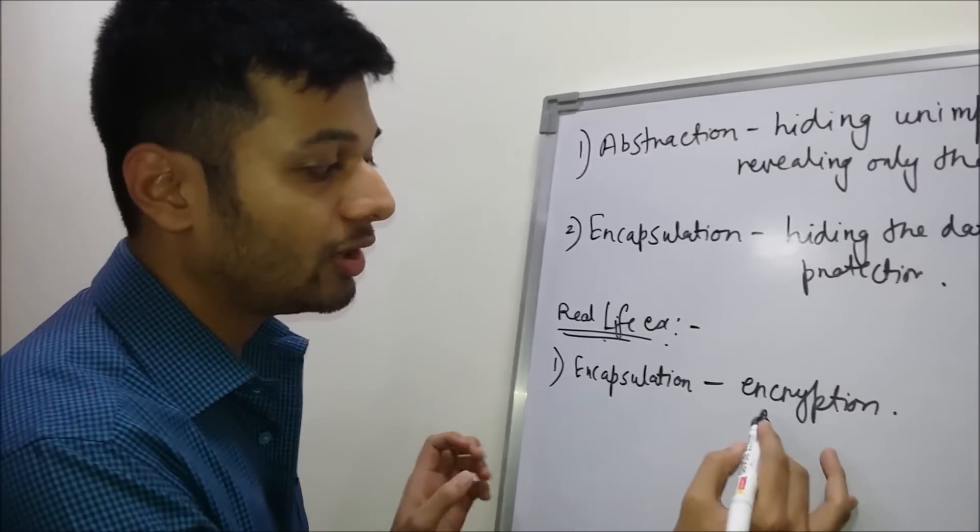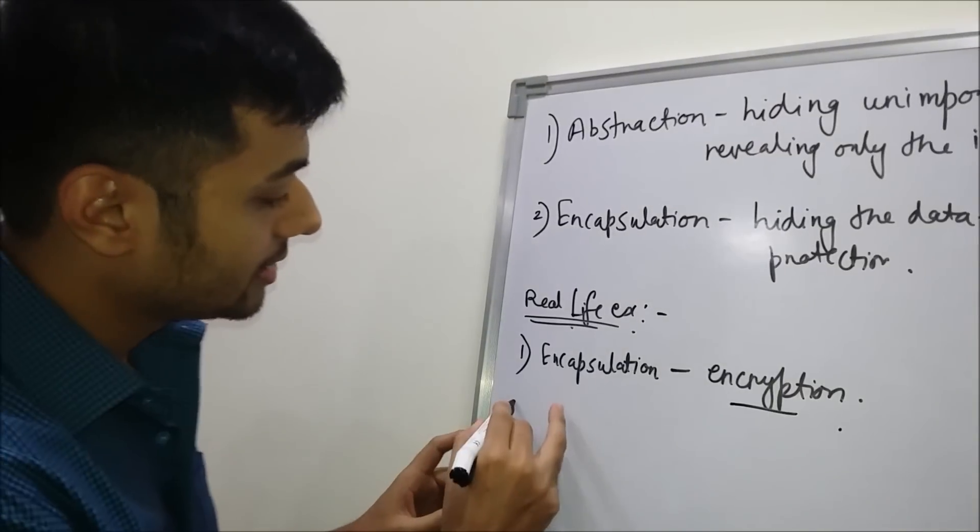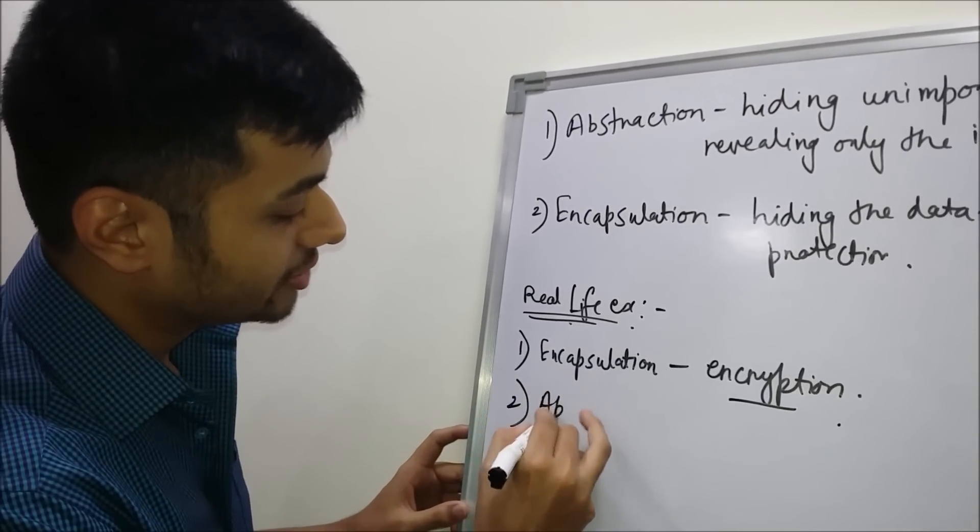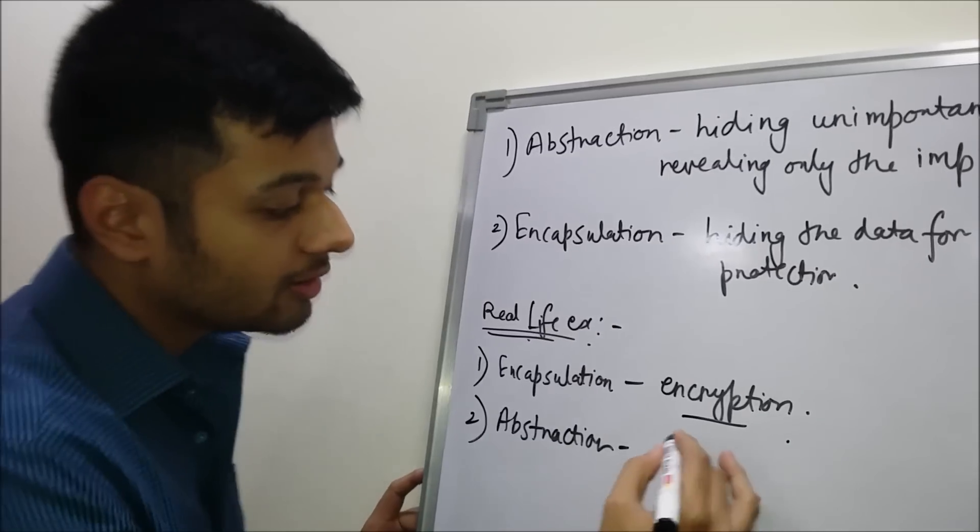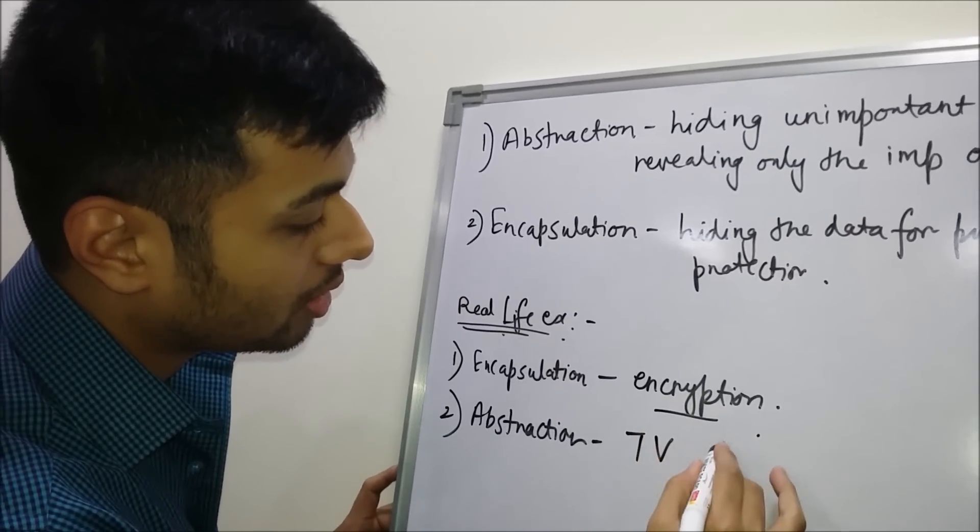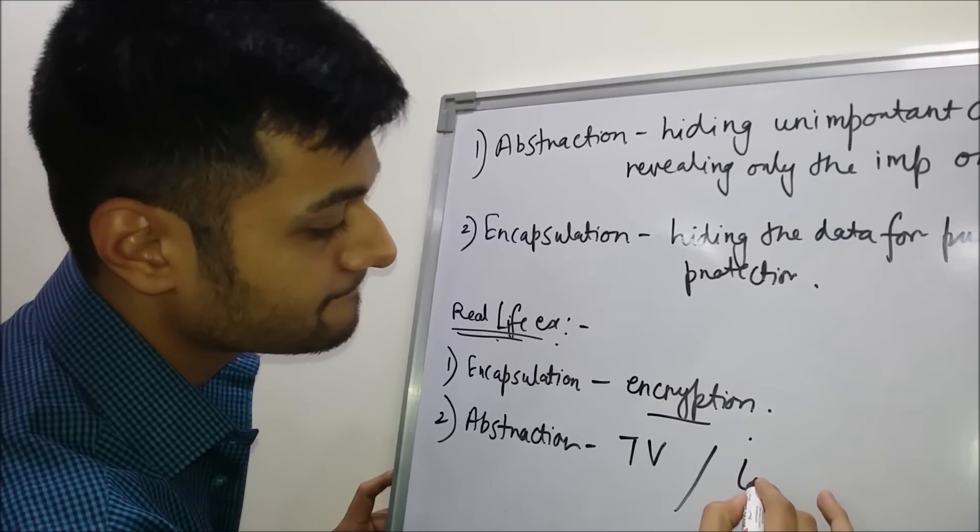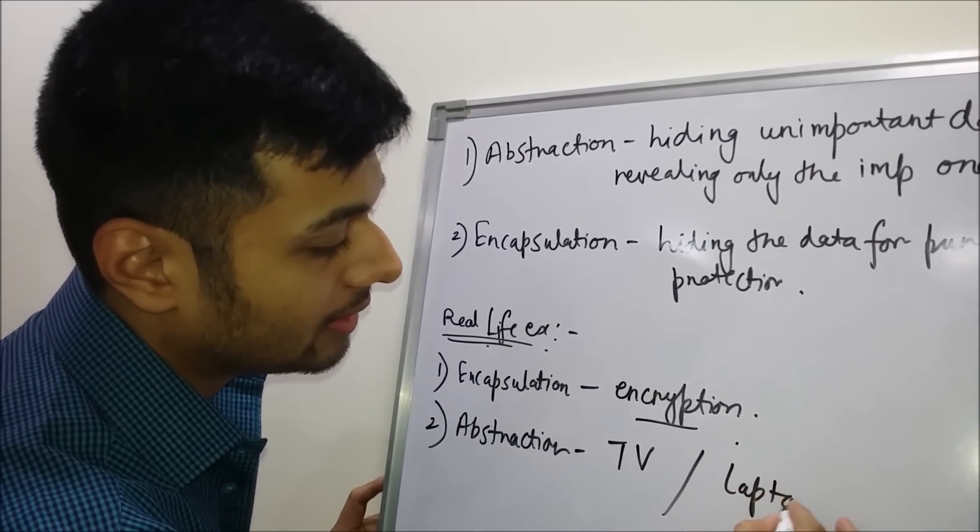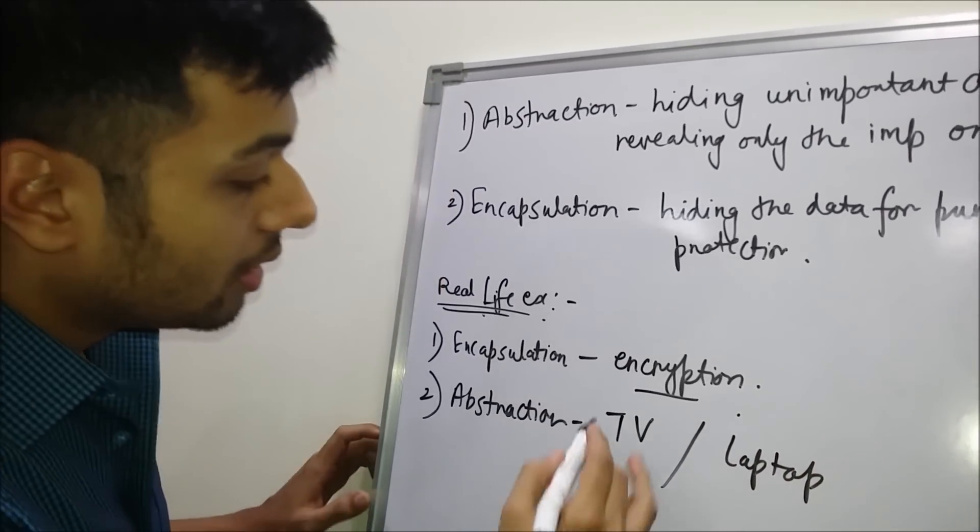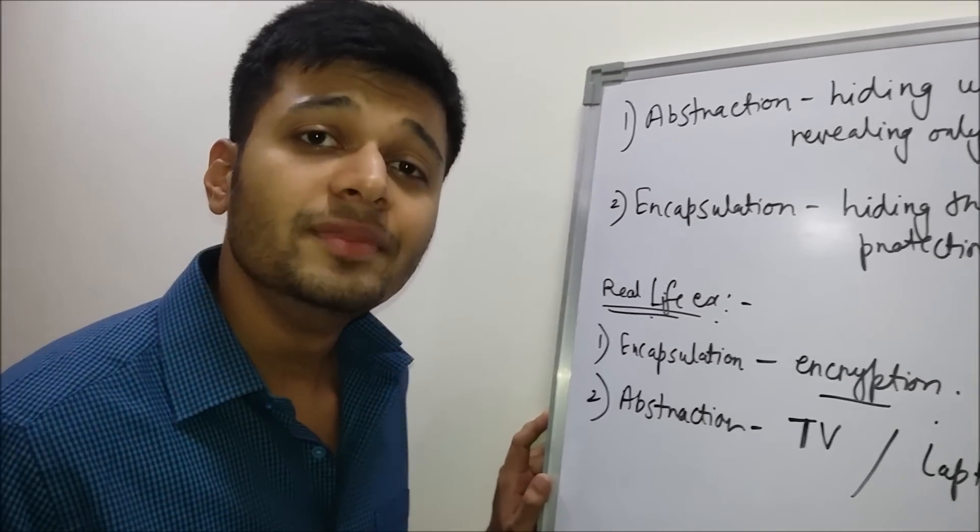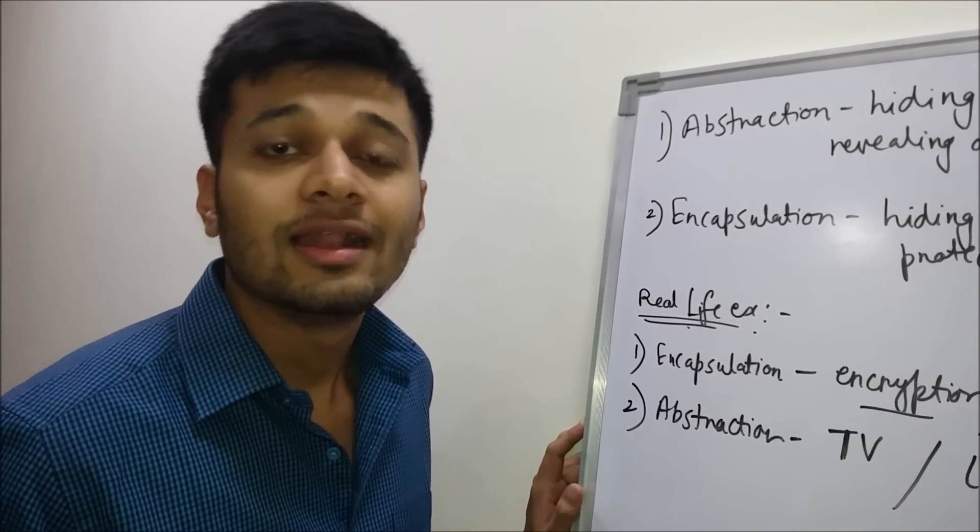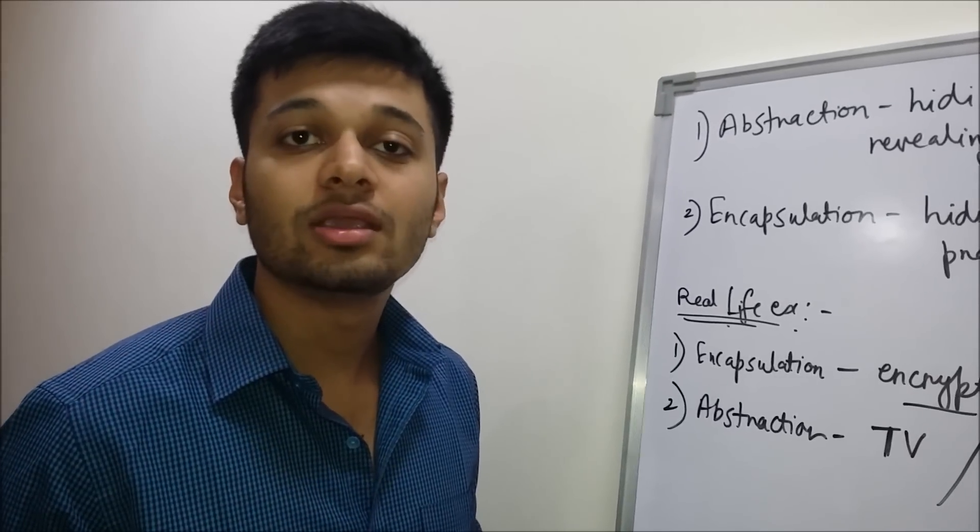The second is abstraction. We can have TV or laptop as an example. For TV, while watching TV we only need to know a few things about it like the buttons, switching on and off, changing the channels, or increasing or decreasing the volume.